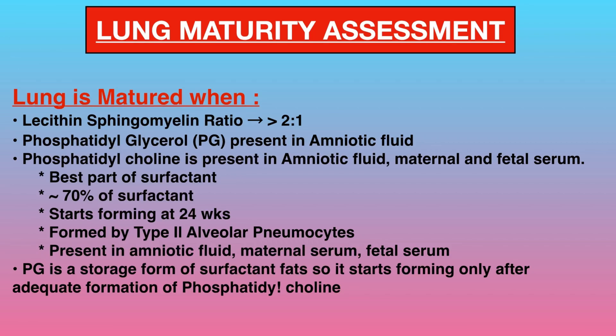Phosphatidyl glycerol (PG) is present in amniotic fluid, maternal and fetal serum. It is the best part of surfactant — almost 70% of surfactant. It starts forming at 24 weeks and is formed by type 2 alveolar pneumocytes. It is present in amniotic fluid, maternal serum, and fetal serum.